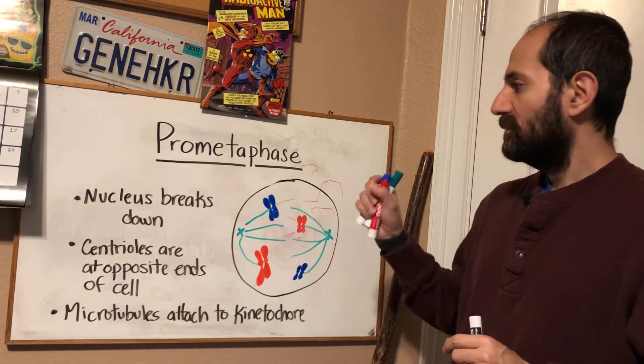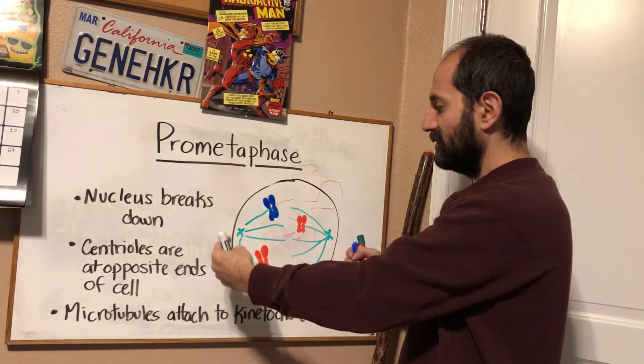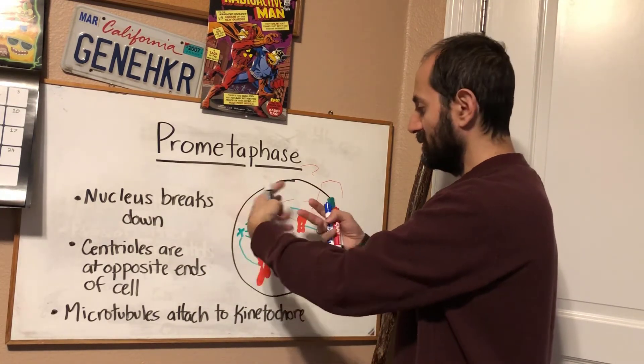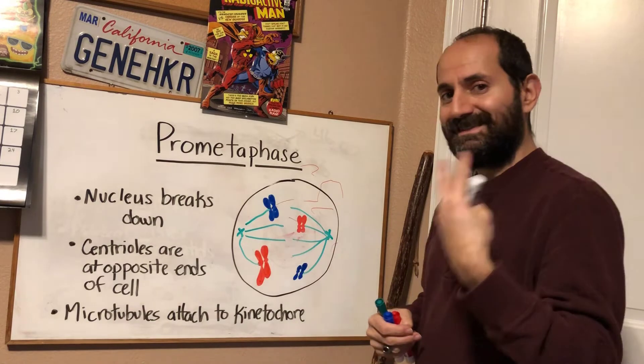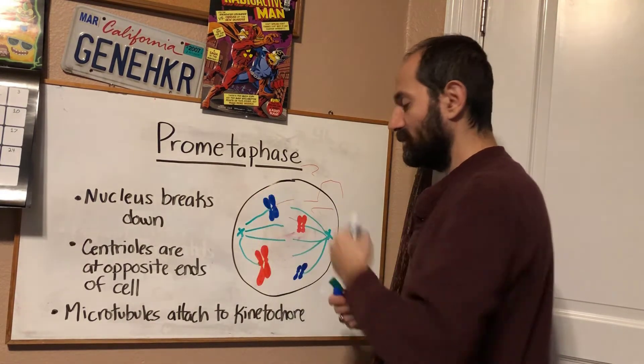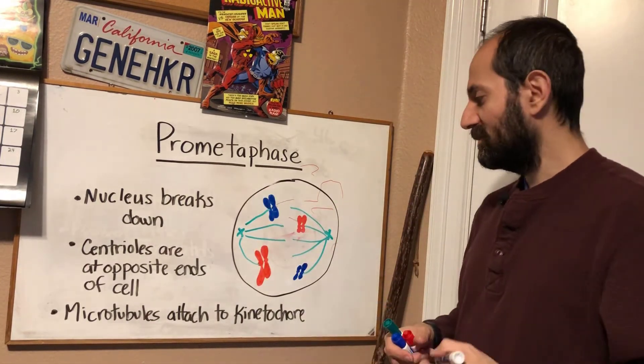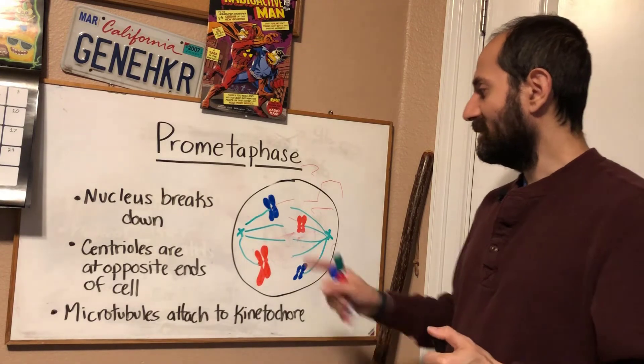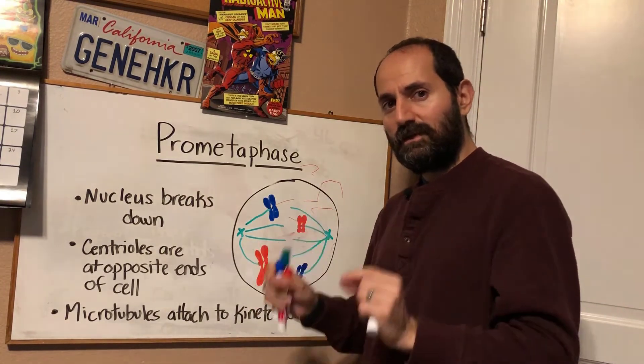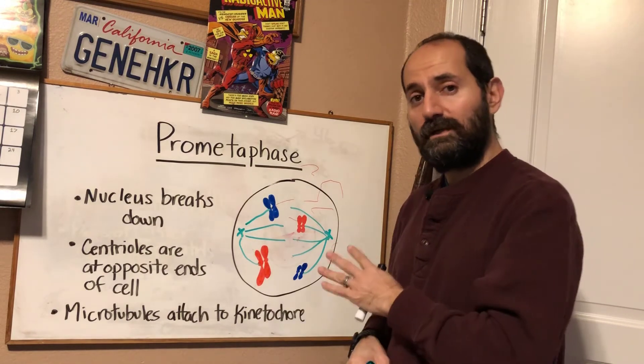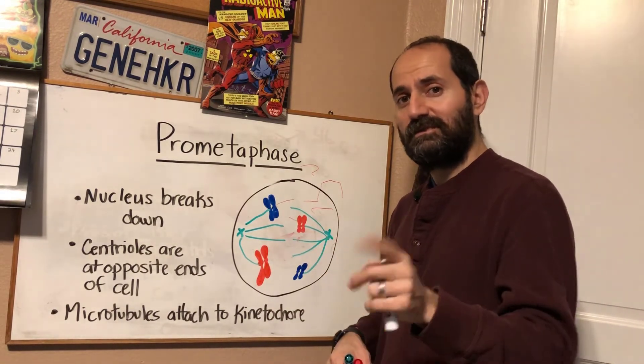So again, nucleus breaks down. Centrioles are at opposite ends. These spindles, these microtubules that have been synthesized from there, attached to kinetochore proteins on the sister chromatid pairs. And the sister chromatid pairs start to make their way to the center of the cell. They're not quite there yet. Let's save that for the next step.